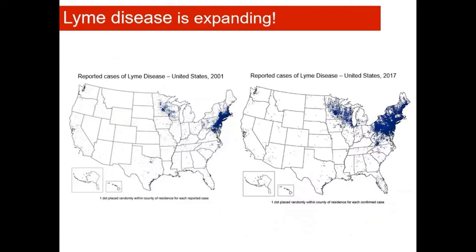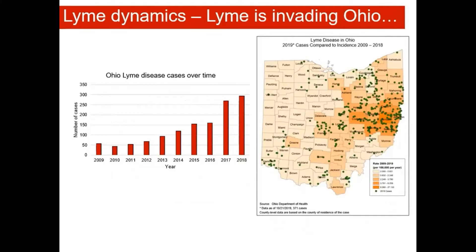Lyme disease is really relevant right now because it is expanding. We're seeing more and more cases year after year and we're seeing those cases spread into new places in the country. In particular, we've seen an expansion in the state of Ohio recently. In the past six years or so, we've seen a doubling in the number of confirmed cases in the state. The CDC estimates that the actual number of cases may be more than 10 times the number shown here, so it's something that all Ohioans should be aware of and should be taking precautionary measures to protect themselves.